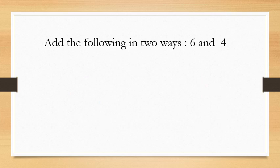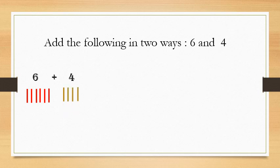Now let's do another question: add the following in two ways — 6 and 4. You have to add 6 and 4 horizontally as well as vertically. Horizontally means adding side by side. Let's do the horizontal method first. 6 plus 4 — draw 6 lines: 1, 2, 3, 4, 5, 6. Then draw 4 lines: 1, 2, 3, 4. Count the total number of lines: 1, 2, 3, 4, 5, 6, 7, 8, 9, 10. So 6 plus 4 equals 10.